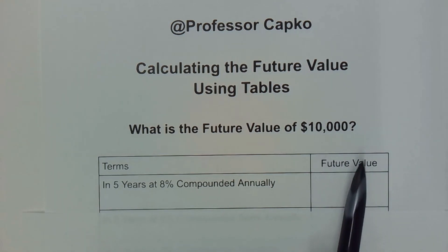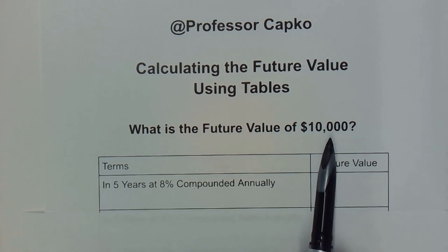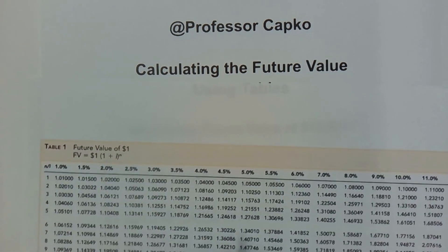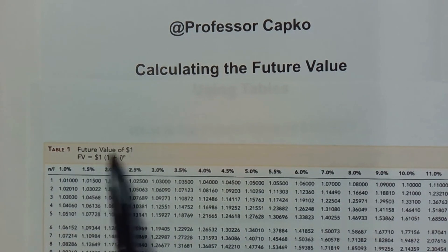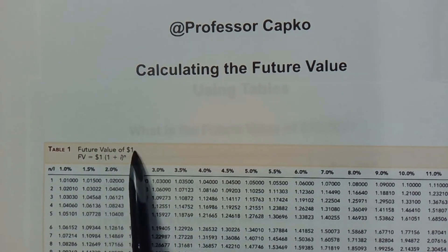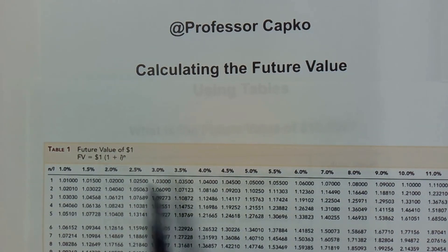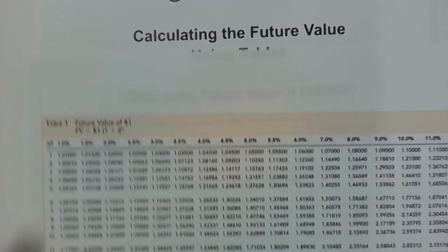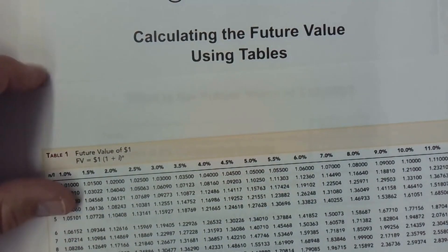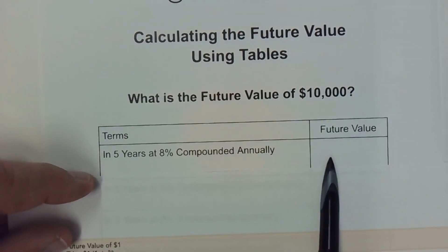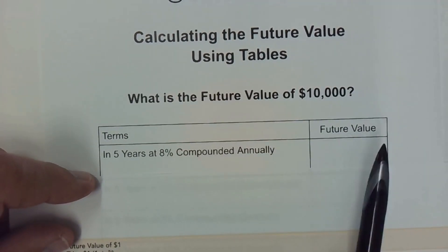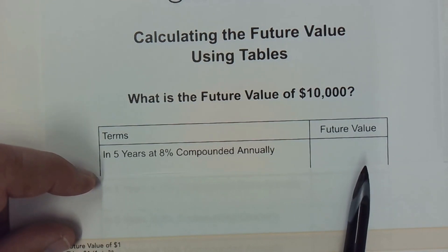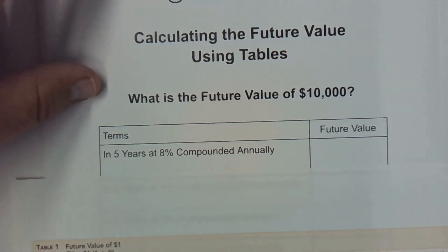We expect the future value to be larger than the $10,000, and the reason I mentioned that is because we're making sure that we're using the future value table. It says future value of a dollar. We need to multiply whatever factor we find here by the $10,000 that we're investing. But we expect it to have a larger amount. If you wind up with a smaller amount for the future value, chances are you are looking at the wrong table. That's where I see students make a mistake all the time. So make sure you're using the right table.